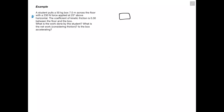To start, we draw our free body diagram. We have our box with a force of gravity and a normal force. The problem says we're moving the box with a 230-newton force applied at 25 degrees above horizontal, so we have a pulling force at 25 degrees above horizontal. We're also told there's a coefficient of kinetic friction, so there's a friction force acting on the box.